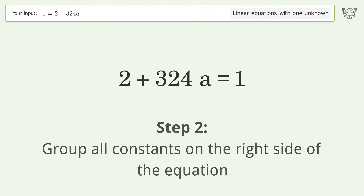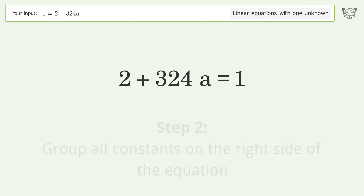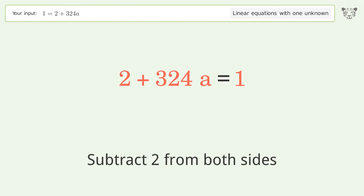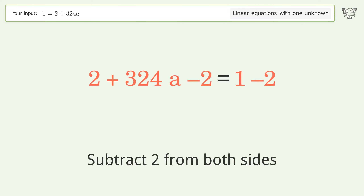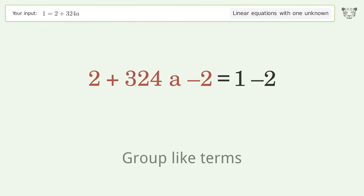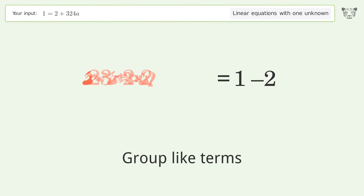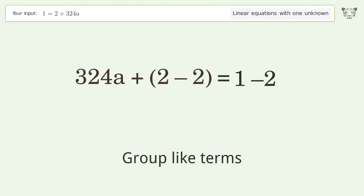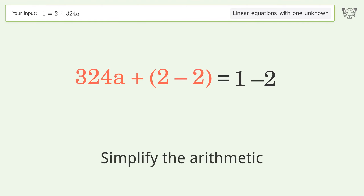Group all constants on the right side of the equation — subtract 2 from both sides. Group like terms. Simplify the arithmetic.